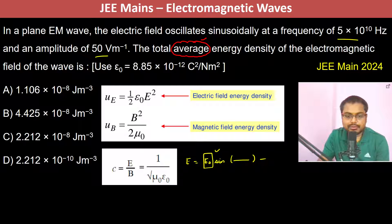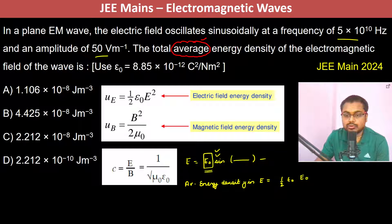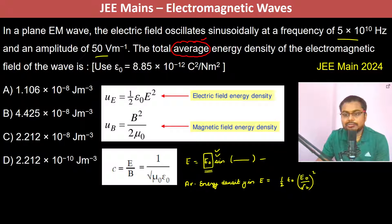Now when we have to find out the average energy density in electric field, this is going to be half epsilon naught into not E naught square, but E naught by root 2 whole square, which is basically the RMS value of E.